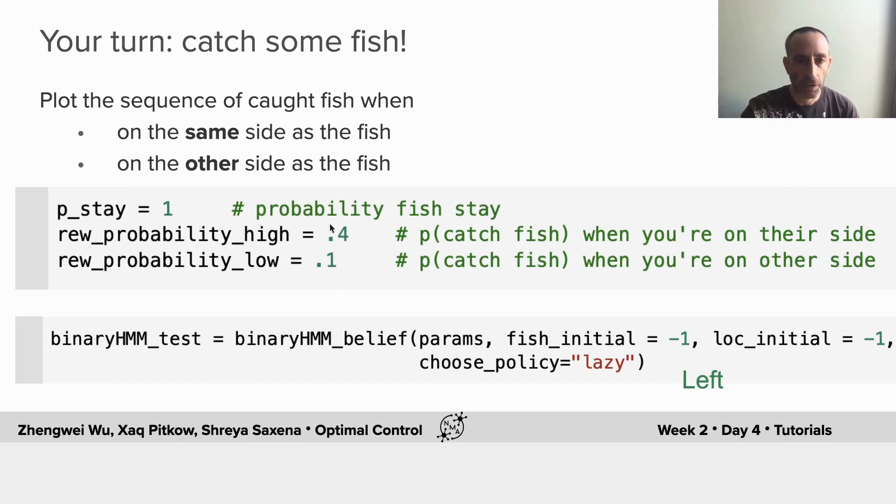And you'll catch fish on one of those sides or the other depending on your initial condition. So here you'll set the initial condition to be left for both the fish and for you, and you'll just stay on that side. And the fish will stay on that side because p_stay equals 1, and see when you catch the fish.